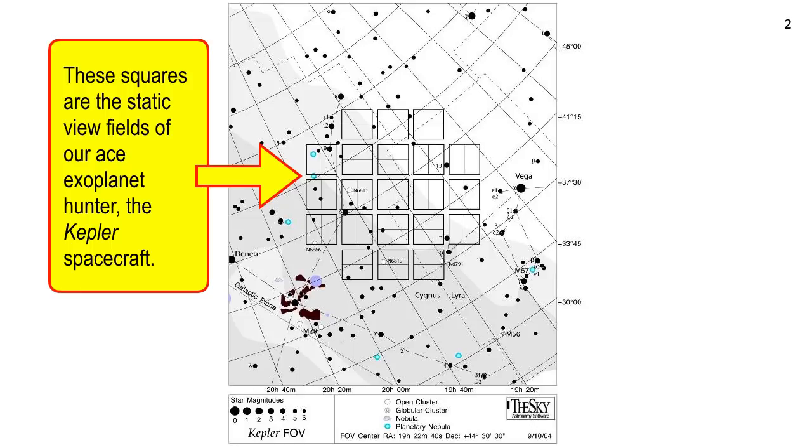It constantly scans each square looking for small variations in either the brightness or the position of a star. Because when an exoplanet goes in front of a star, its brightness dips a little bit. And if it's a fairly big exoplanet, it'll cause the star to move a little bit, to budge left or right, or up or down. So that's what Kepler's looking for.